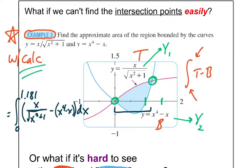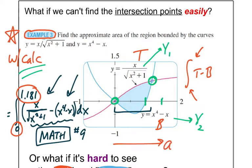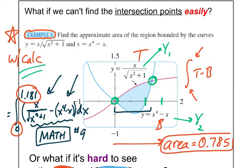Looking at the scaling on the graph, it's definitely not a very big area, which makes perfect sense. So if you can't find the intersection points easily, you'll generally have a calculator to help you out. Just use the intersect feature to find the endpoints of the integral, and then you can also plug it back into the calculator to find the actual integral area using math 9.